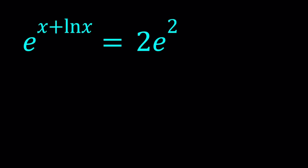Hello everyone. In this video, we're going to be looking at an exponential equation. We have e to the power x plus ln x equals 2 times e squared, and we're going to be looking for x values. I'll be presenting two methods. Let's start with the first one.